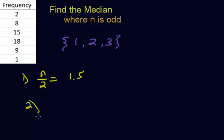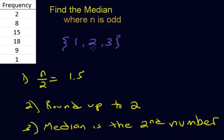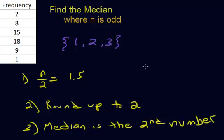So, divide n by 2, you get 1.5, round up to 2 — always round up. Step three: the median is the second number. And that gets us the answer we got at the very beginning. It's 2 because that's the middle number. So what you're going to do is take n, which is 3, divide it by 2, you get 1.5, round it up to 2, and then go find that second number, which is right there.